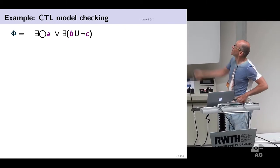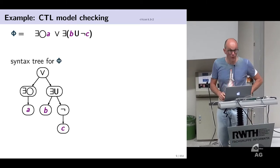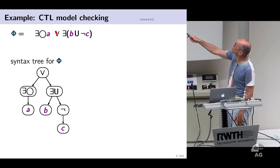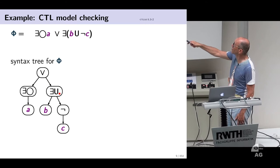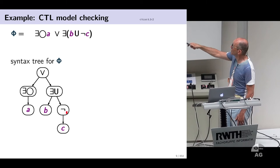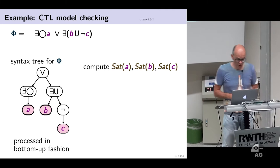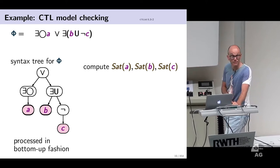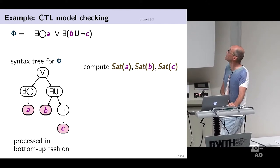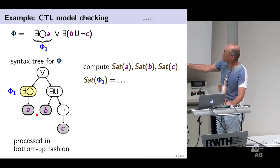Let's take an example: there exists a state and a path which has as next state satisfying A, or there exists a path which satisfies B until not C. We look at the parse tree of this formula. The topmost operator is the disjunction, with left argument 'there exists next A' and right argument 'there exists until' where the left is B and the right argument is not C. We do a recursive descent starting with the leaves A, B, C, computing the set of states satisfying each.